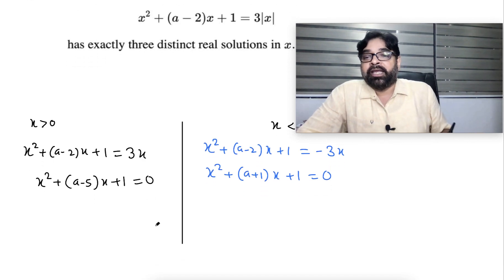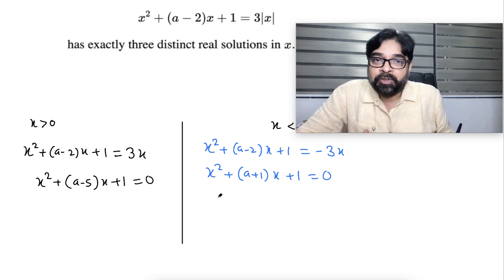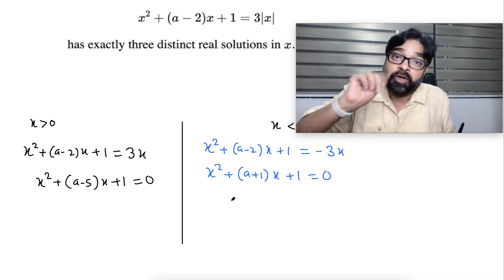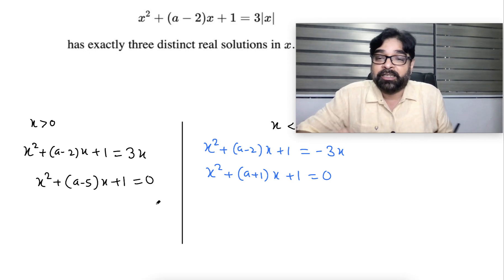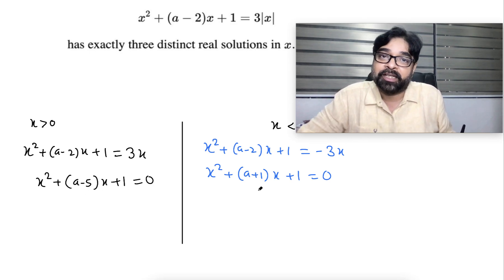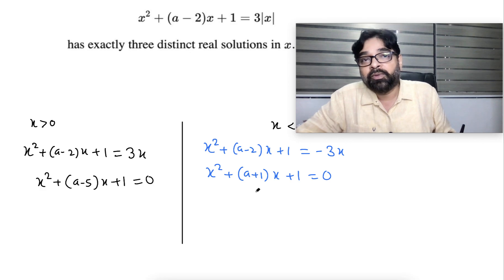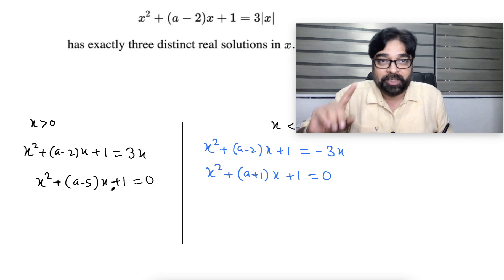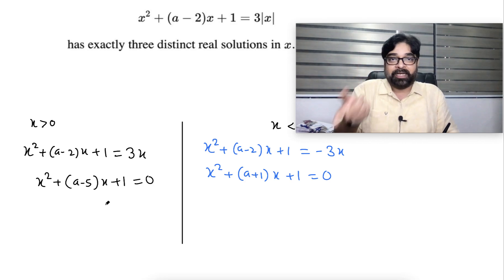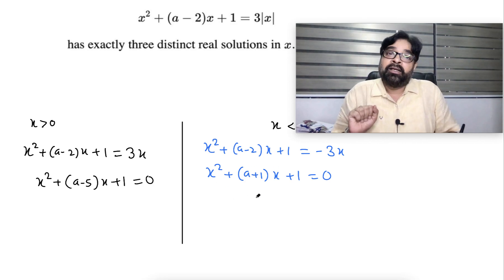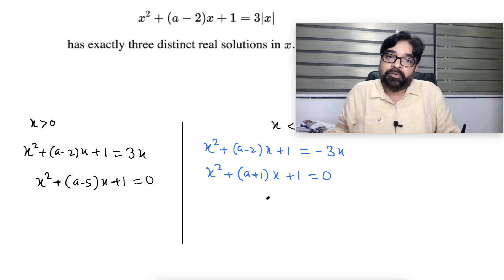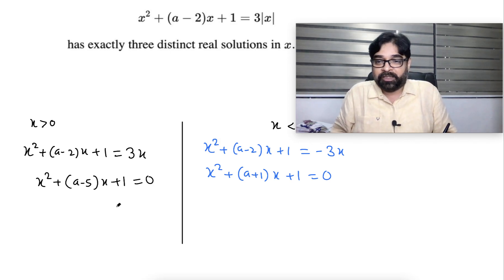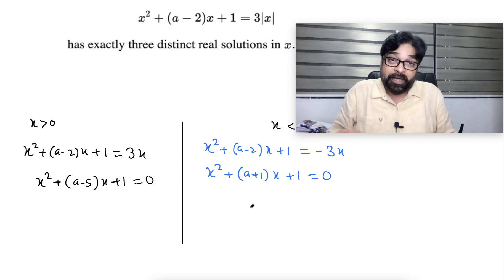If both discriminants are greater than zero, both quadratics give two different roots each — giving four different roots total. If one D is less than zero and the other D is greater than zero, we only get two real roots. So the only valid situation is: one D equal to zero (giving one repeated root counted once) and the other D greater than zero (giving two different roots) — totaling three.